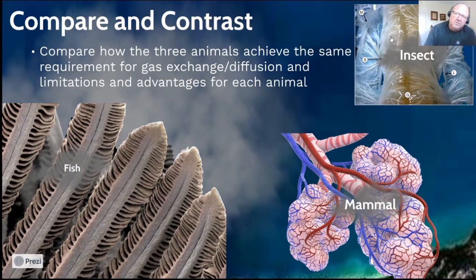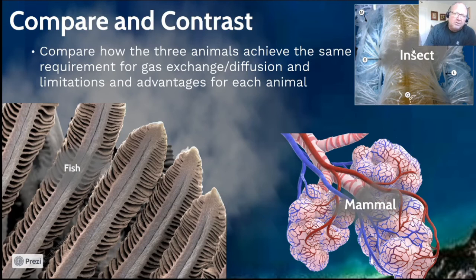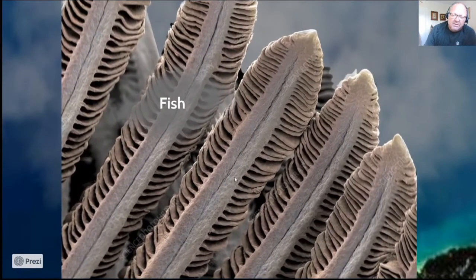So you compare how the three animals achieve the same requirements for gas exchange and diffusion. You need one comparison for surface area, one for maintaining a favorable concentration gradient, one for moisture control, one for protection, and so on — there are many requirements you can discuss.